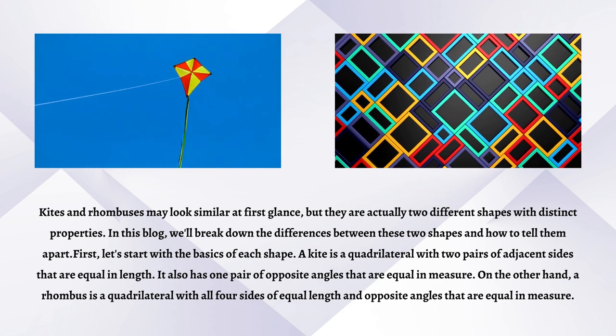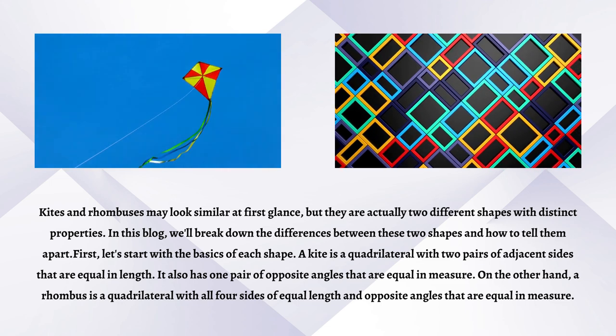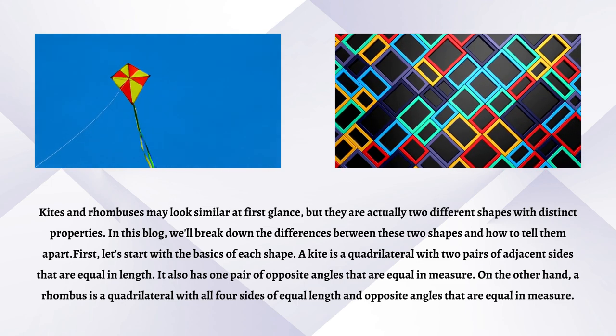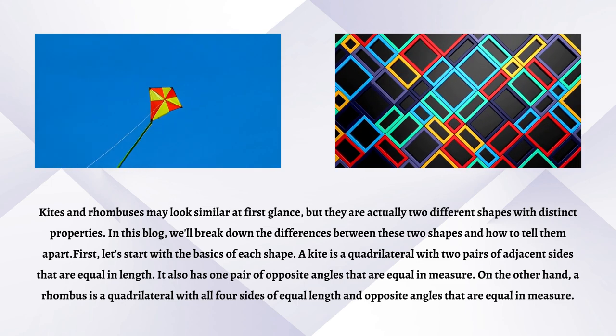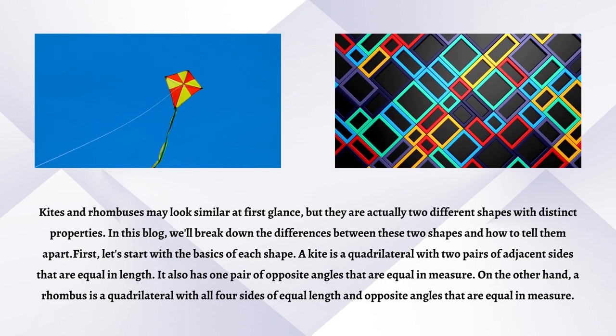On the other hand, a rhombus is a quadrilateral with all four sides of equal length and opposite angles that are equal in measure.